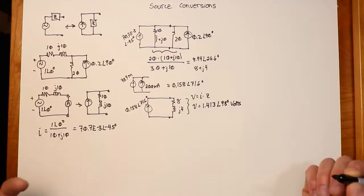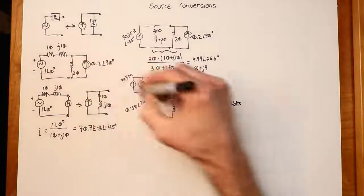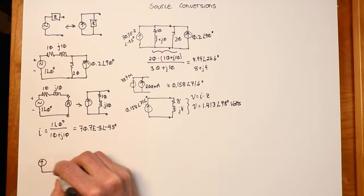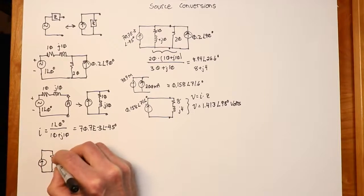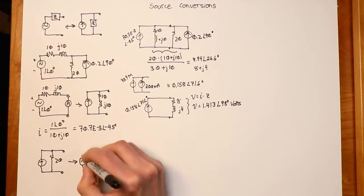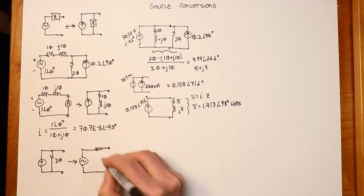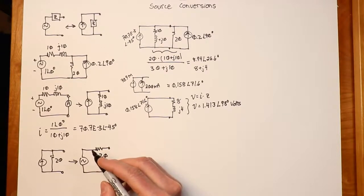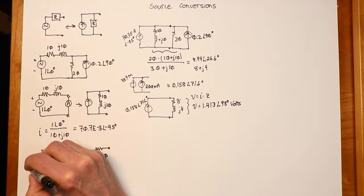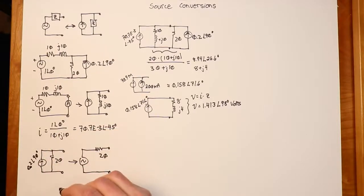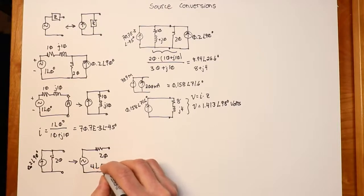Alternatively, we could take the current source and translate that one instead. We have a current source and a 20 ohm, and that's supposed to turn into a voltage source with a series impedance. The value of the voltage: we take the current source — the 0.2 amps at 90 degrees — open circuit, pass that through the 20 ohms, and that gives us basically a voltage of 4 volts at 90 degrees.